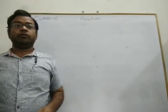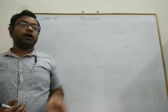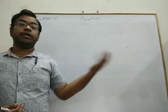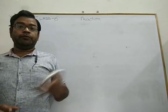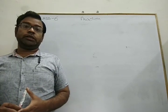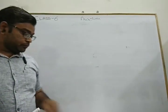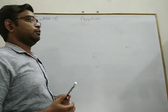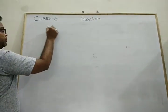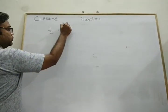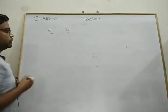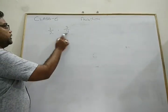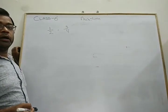What is a fraction? What does it represent? Suppose a number is expressed in the form such as 1 upon 2 or 3 upon 4. This type of number is known as a fraction.